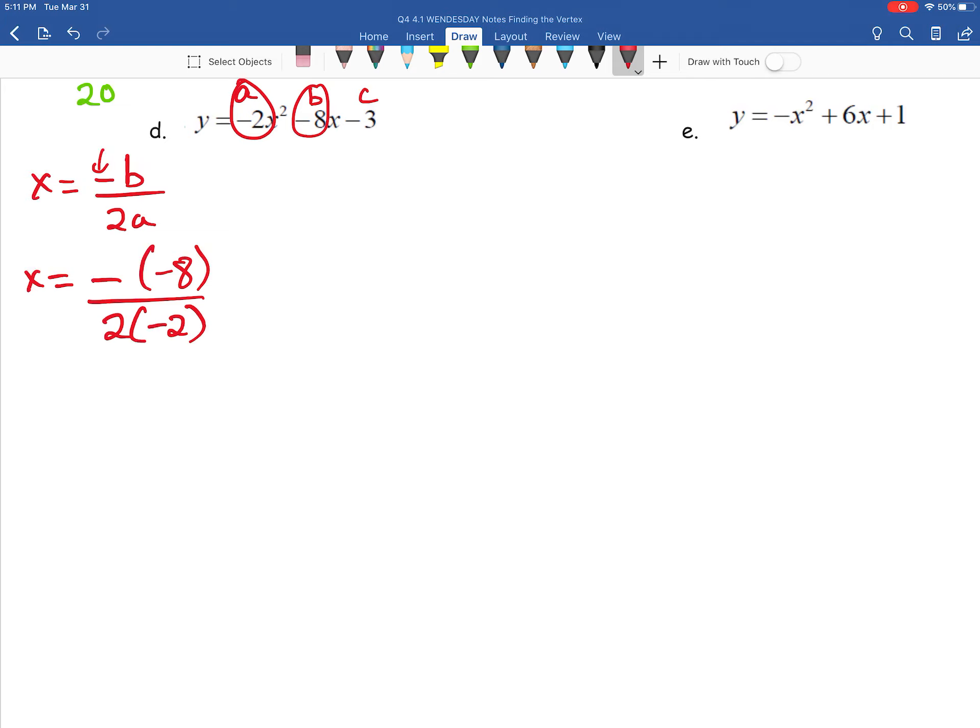And now we're going to go ahead and simplify this up. So x equals the opposite of negative 8 comes out to be regular 8 on top. Whereas on the bottom, 2 times negative 2 comes out to be negative 4 on the bottom. And then as a result, x equals negative 2.